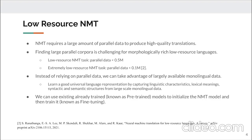NMT is data-hungry, requiring a large amount of parallel data to produce high-quality translation. Finding such large parallel data is challenging for morphologically rich low-resource languages. We consider a language low-resource when parallel data is below 500,000 sentence pairs. If parallel data is even less than 100,000, we categorize it as an extremely low-resource language.